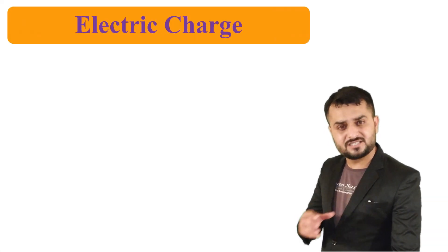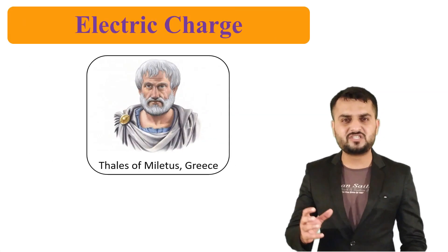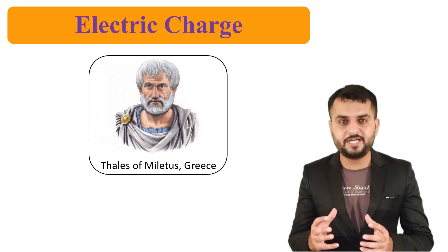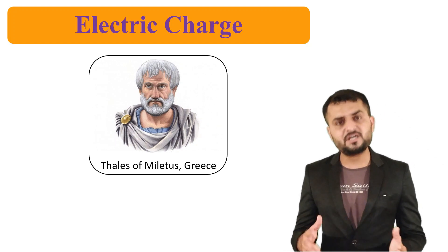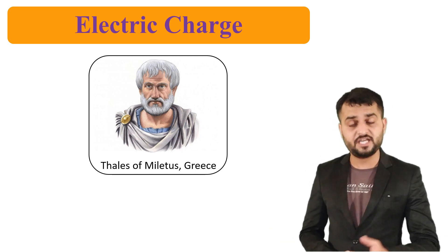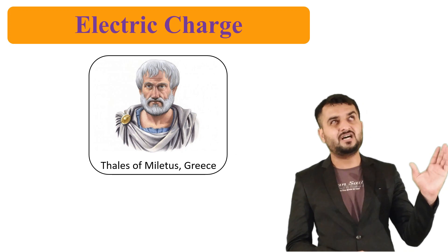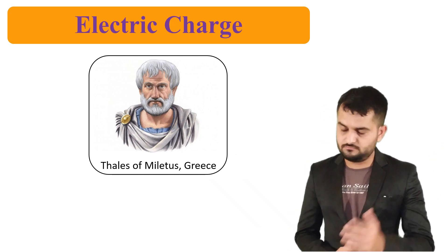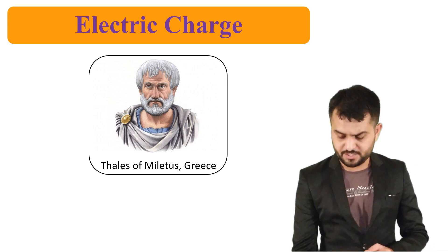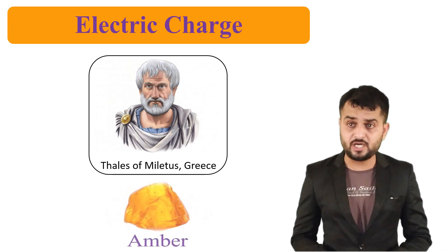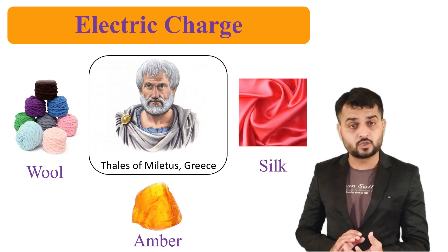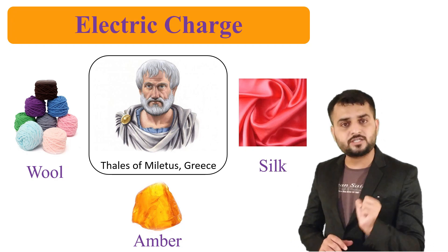This electric charge property was first experimentally tested by Thales of Miletus in Greece in 600 BC. What did he observe? He found out that when an amber is rubbed with wool or a silk cloth, it attracts some lighter objects.